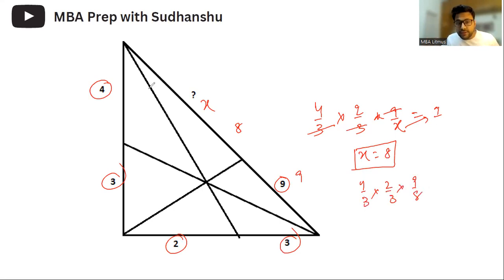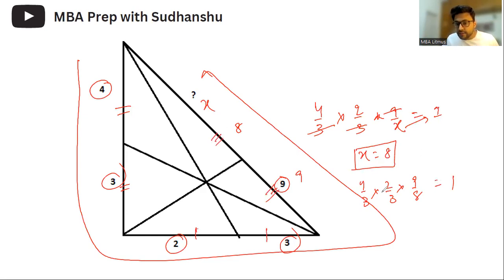One thing to note here is that you have to take these ratios in a cycle. So, this to this, this to this, and this to this. Multiply it, put it equal to one. See, this three and three gets cancelled here. Four and two gets cancelled here. You get equal to one. That my dear friends is Ceva's Theorem.